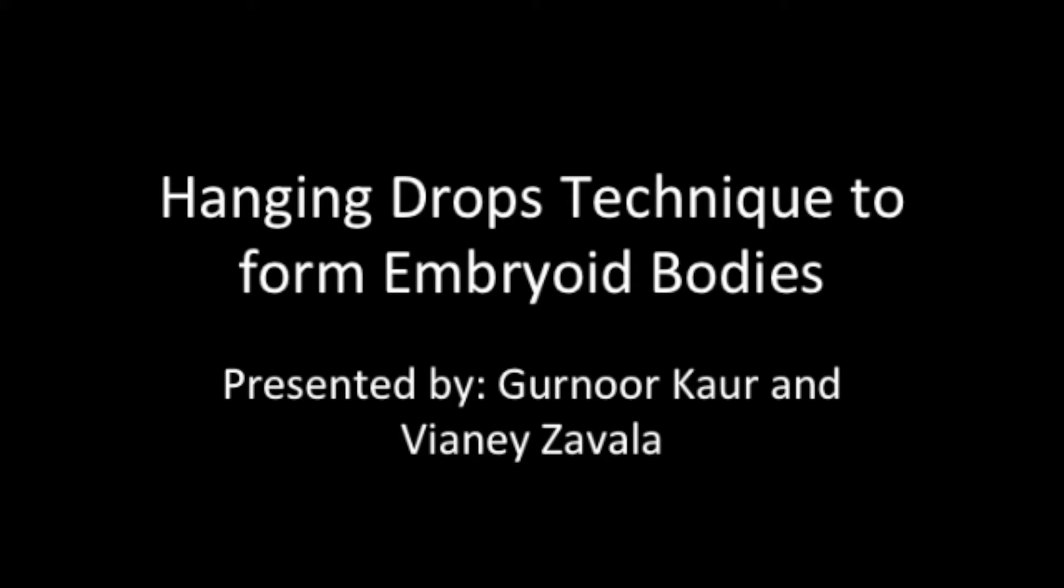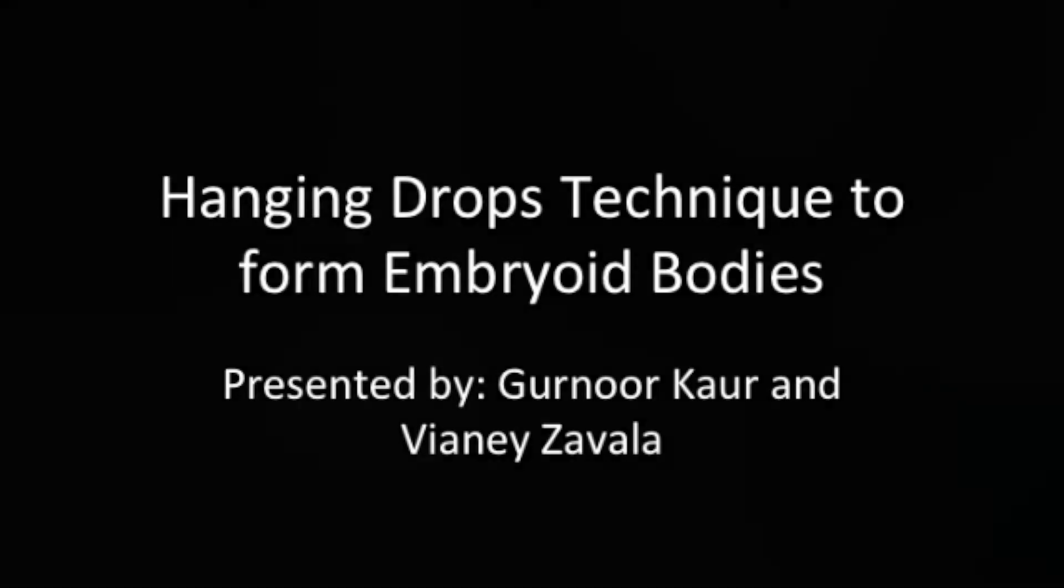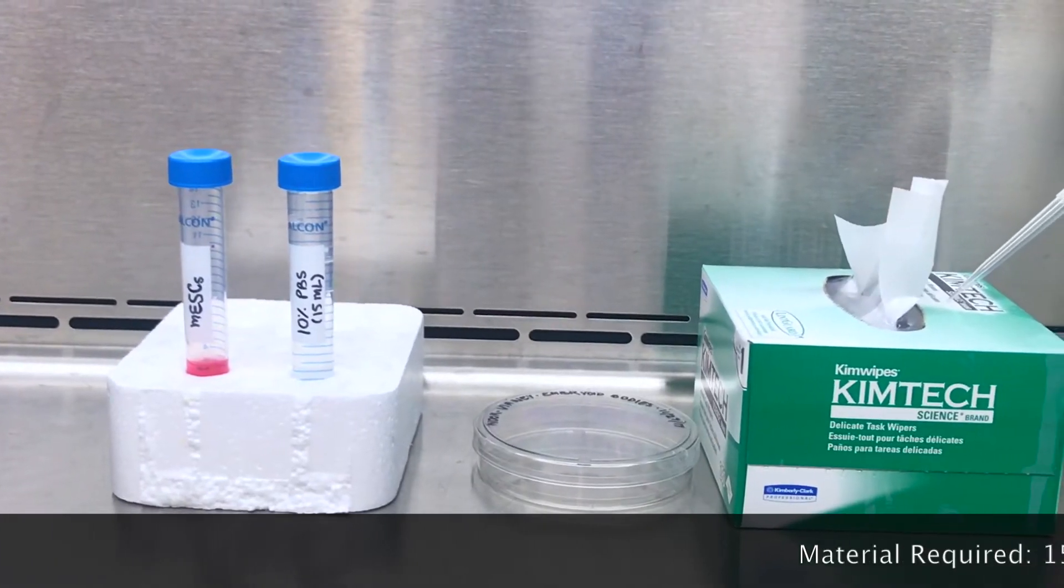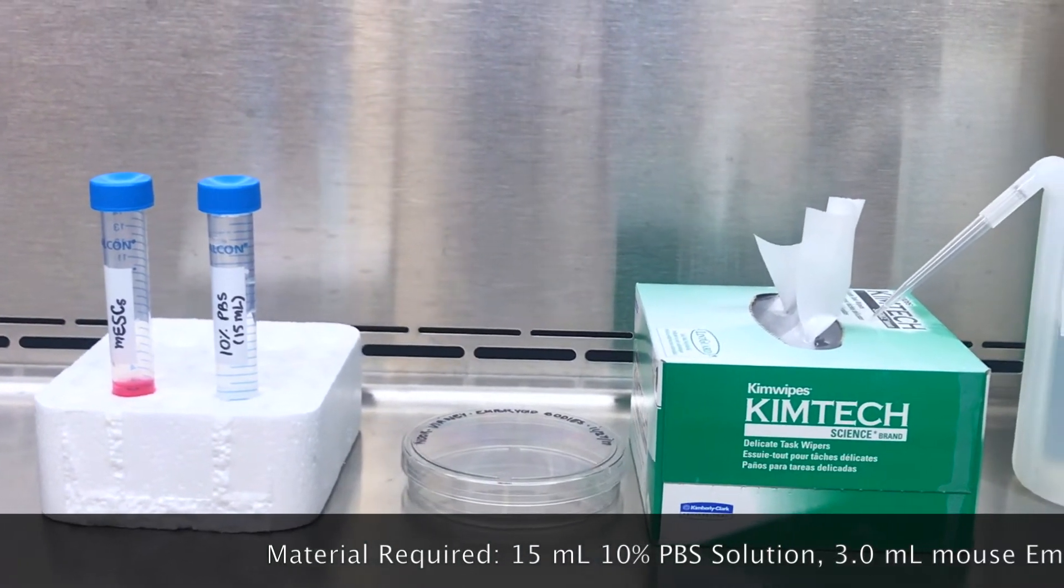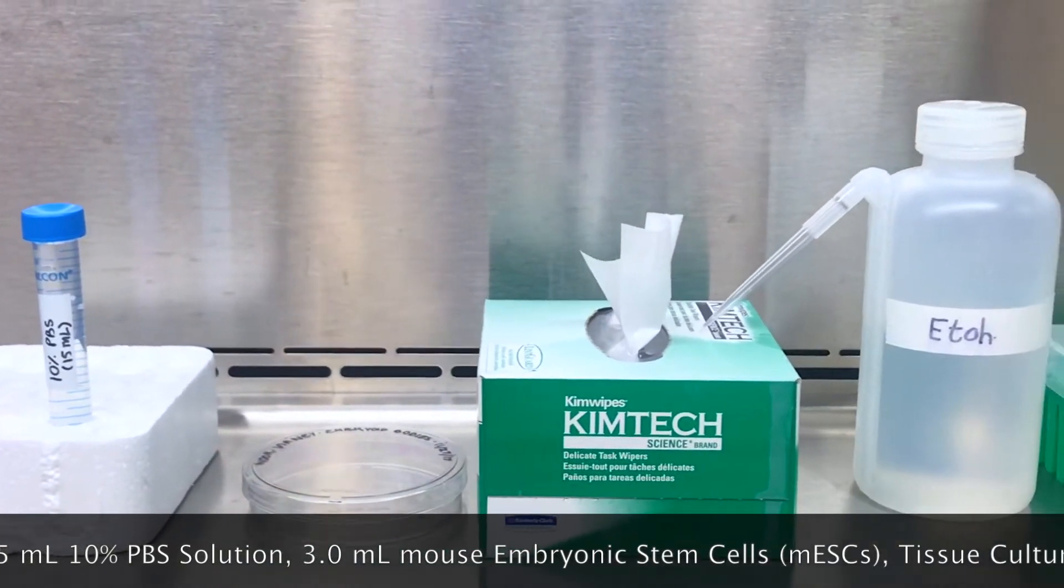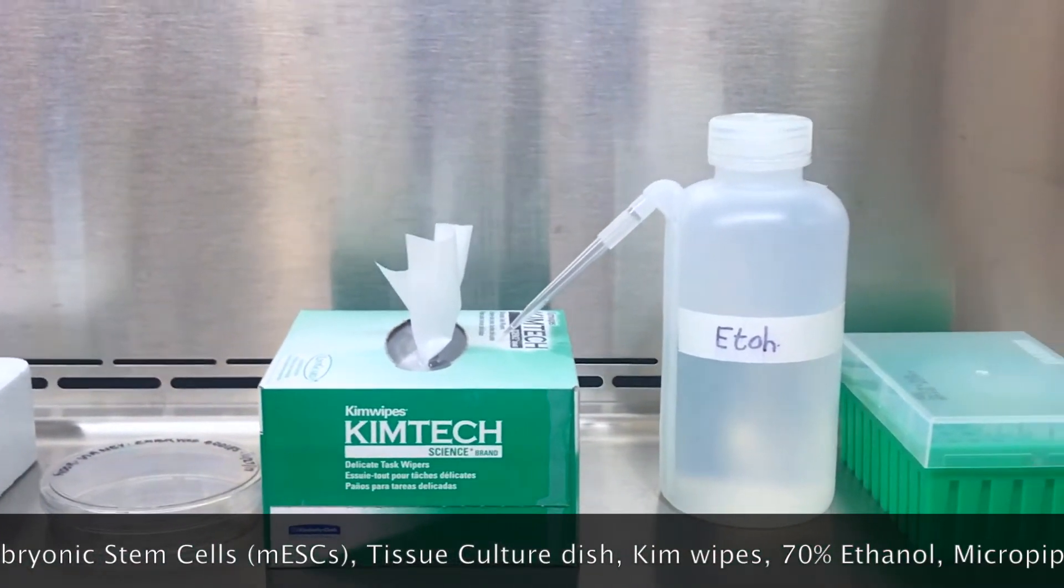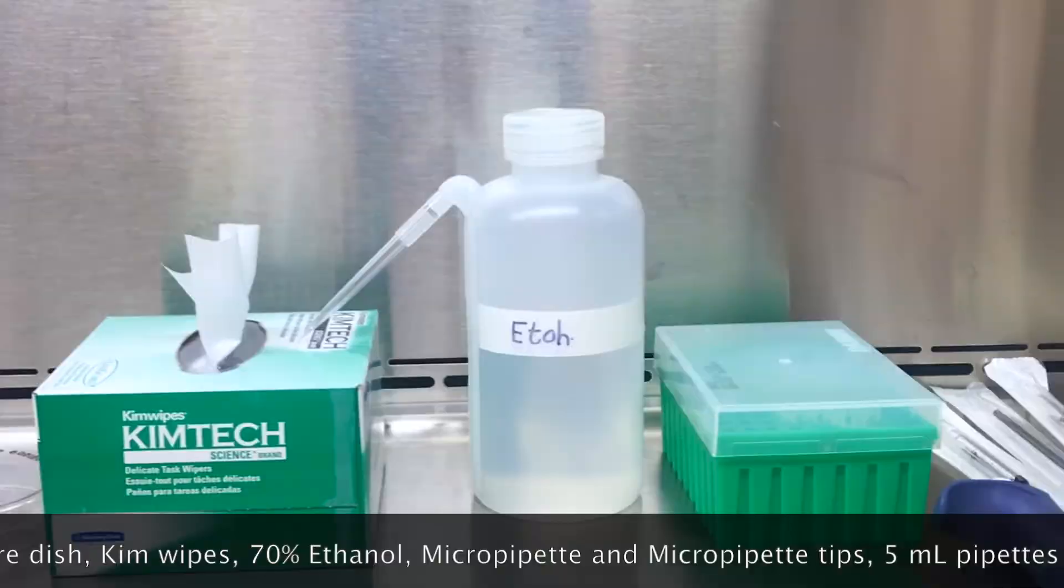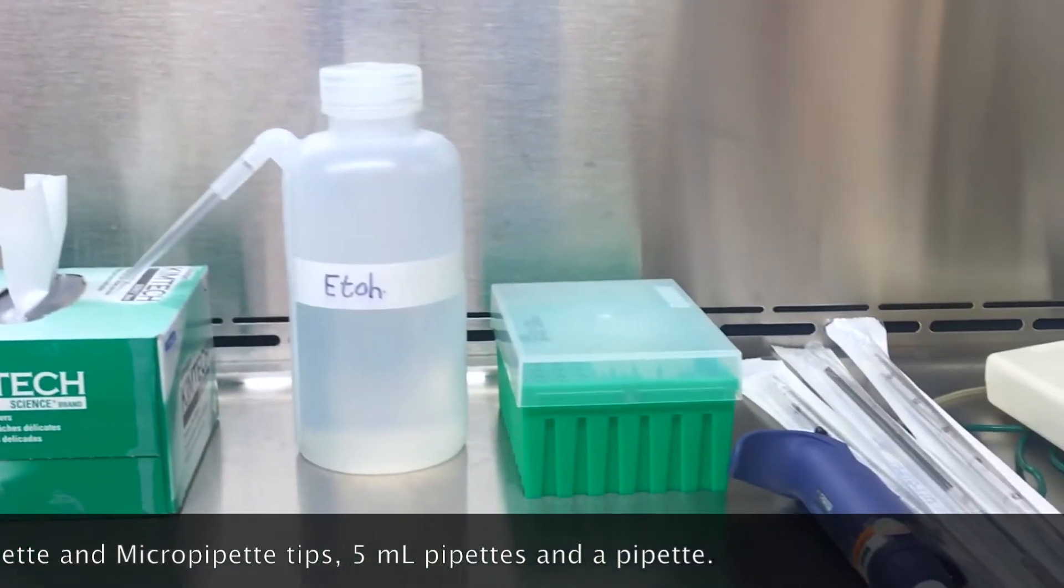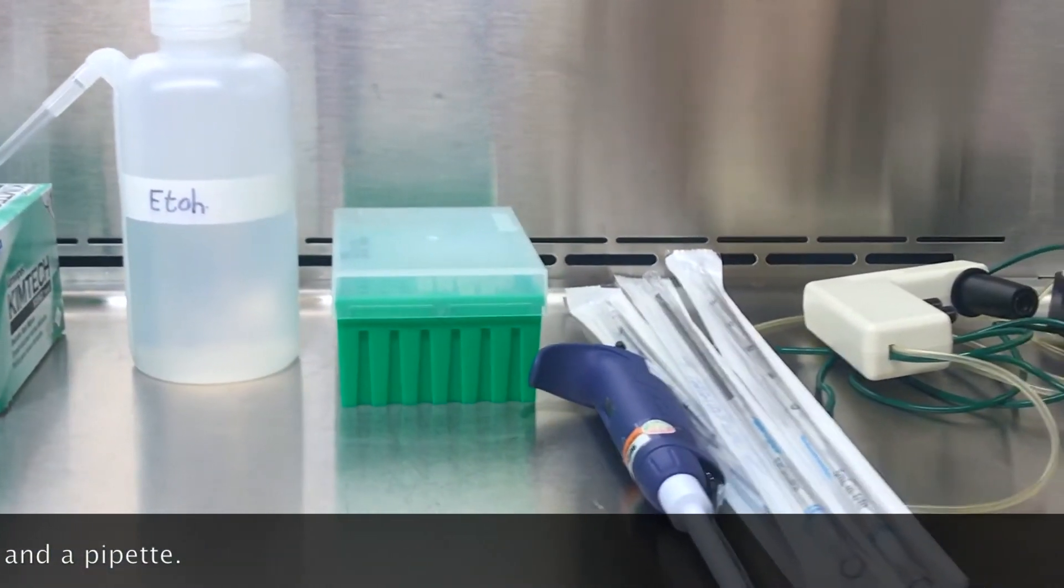Today we will be demonstrating the protocol for hanging drops technique for formation of embryoid bodies. Material required for this technique includes 15 milliliters of 10% PBS solution, 3 milliliters of mouse embryonic stem cells, sterile pipette tips, and a micro pipette.